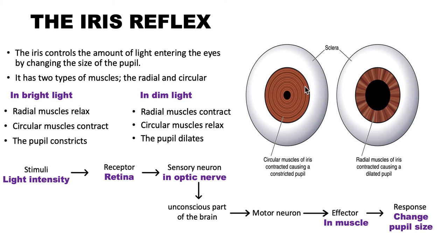So this is what we call the iris reflex — basically how the muscles within the iris react to exposure to dim light or exposure to bright light, so that the size of the pupil can be changed in order to control how much light enters the eye, and so that the light-sensitive cells within our eyes are not destroyed.